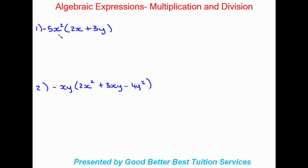You can see we have a monomial timesing a binomial — a monomial obviously being one term and a binomial being two terms. What's going to happen is we need to times this into the brackets. How that works is that this term will times into both of the terms inside the bracket — first into that term, and then into that term over there.